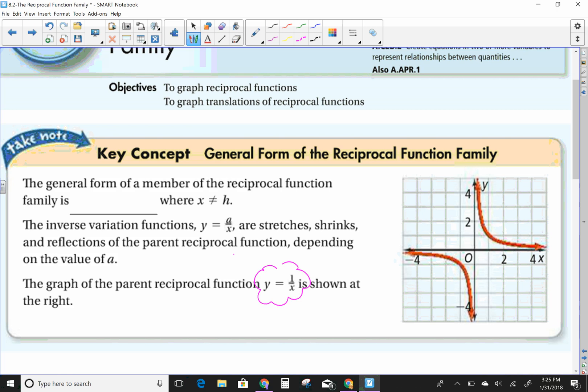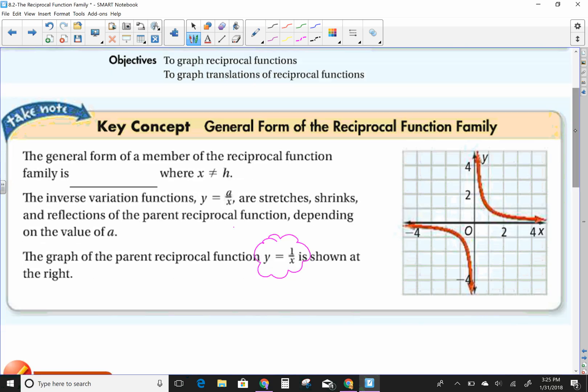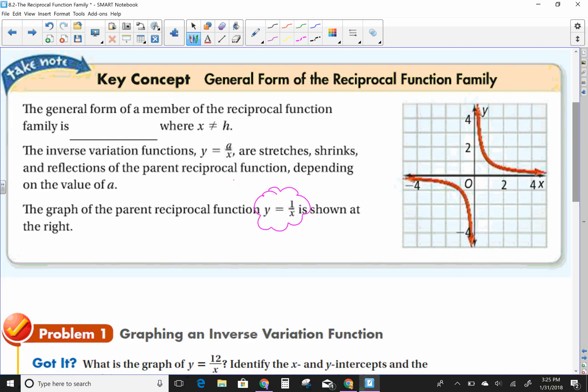This is our parent function, y equals 1 over x, and we kind of talked about that in yesterday's lesson, what that looks like. And as I've been saying all year long, we are trying to get to the point where we can look at an equation and have some idea of what the graph is. Now this is your parent function, y equals 1 over x. And as I said, we always have key points.